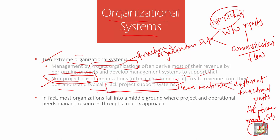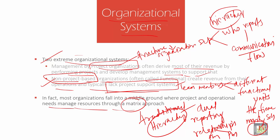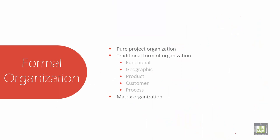In non-project organizations there is typically a lack of support systems, creating a sort of lag. Most organizations fall into a middle ground where project and operational resources are managed through the matrix approach. The matrix approach is a combination — a traditional hierarchical process in which employees have dual reporting relationships, generally both to the functional manager and to the project manager.